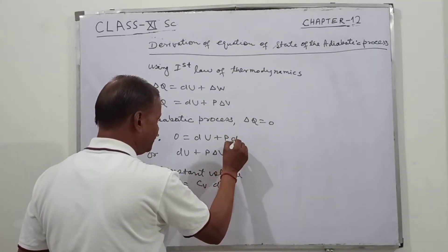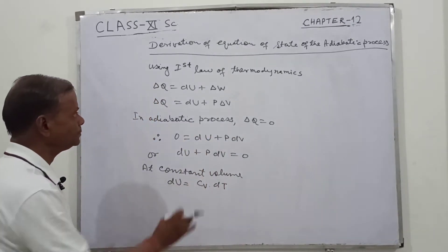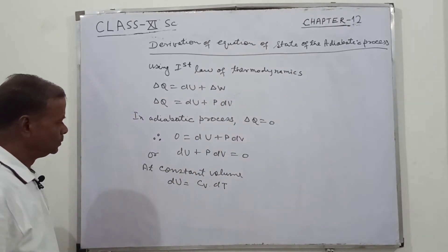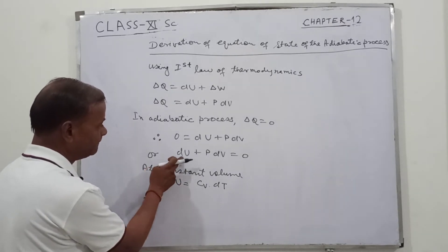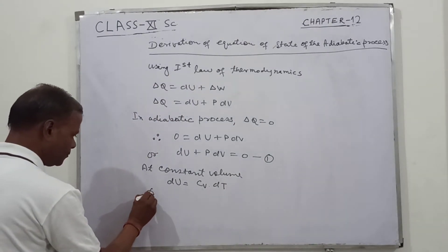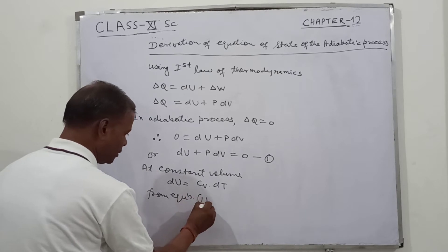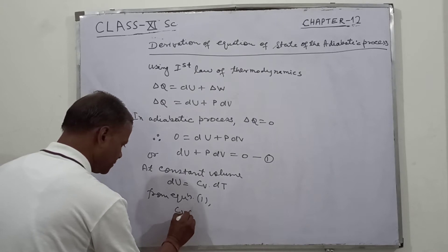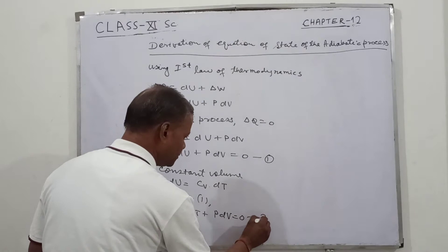At constant volume, dU equals Cv dT. Substituting this value of dU, we get equation 1. From equation 1, we have Cv dT plus P dV equals zero. This is equation 2.